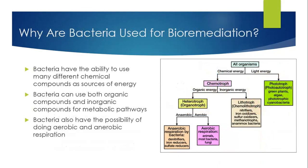Why are bacteria used for bioremediation? Bacteria have the ability to use many different chemical compounds as sources of energy. They use both organic and inorganic compounds for metabolic pathways to gain energy. Examples of organic compound pollutants are hydrocarbons given off by burning fuels or oil spills. Examples of inorganic compound pollutants are nitrates, sulfates, and heavy metals — all of which can be broken down by bacteria.